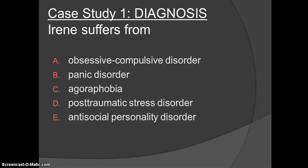Irene suffers from B, panic disorder. Panic disorder is an anxiety disorder marked by unpredictable minute-long episodes of intense dread in which the person experiences terror and accompanying chest pain, choking, or other frightening sensations. In general, anxiety disorder is when a person is continually tense, apprehensive, and in a state of autonomic nervous system arousal.